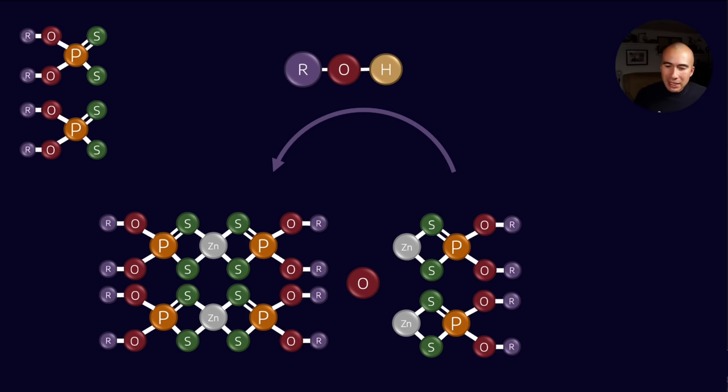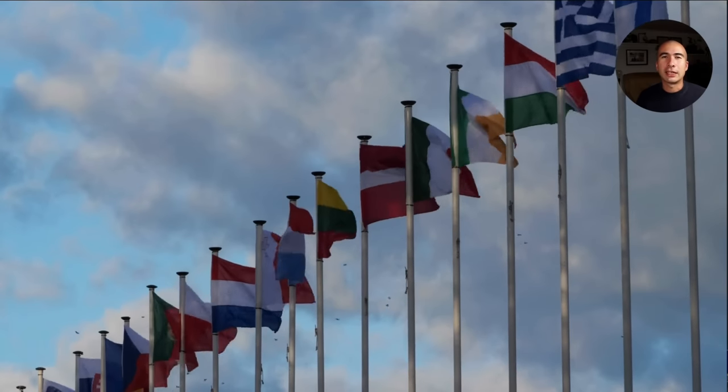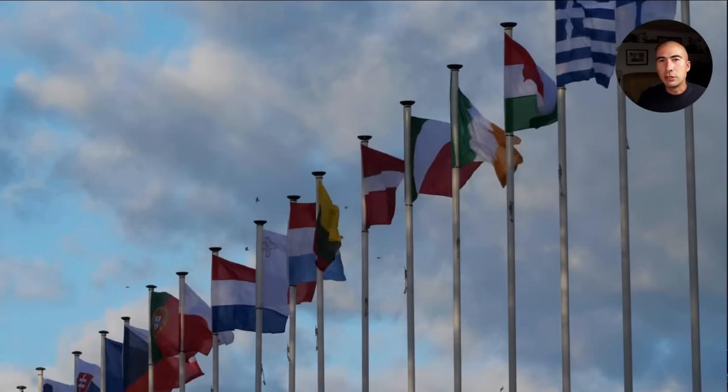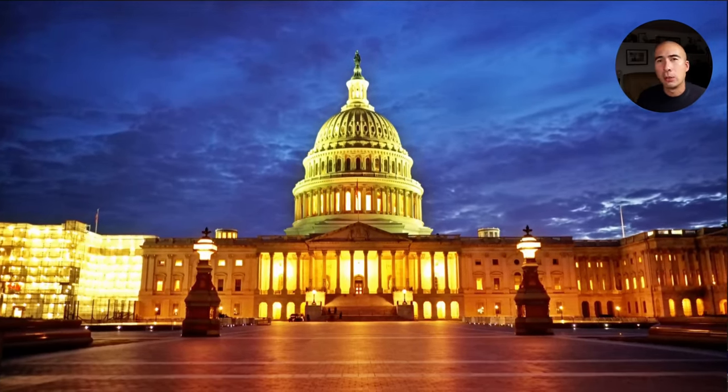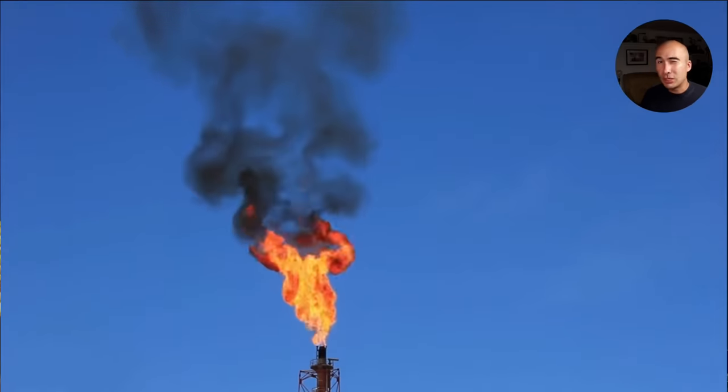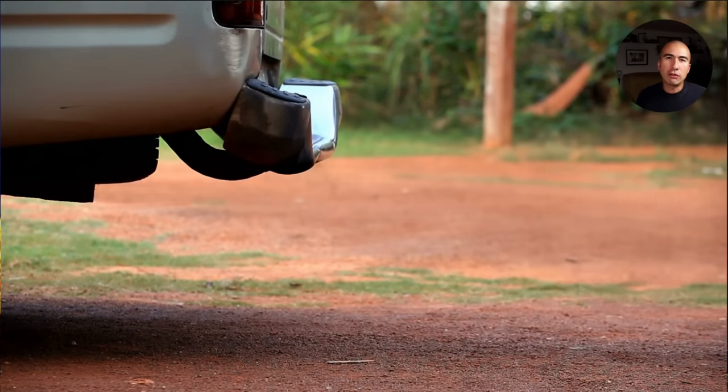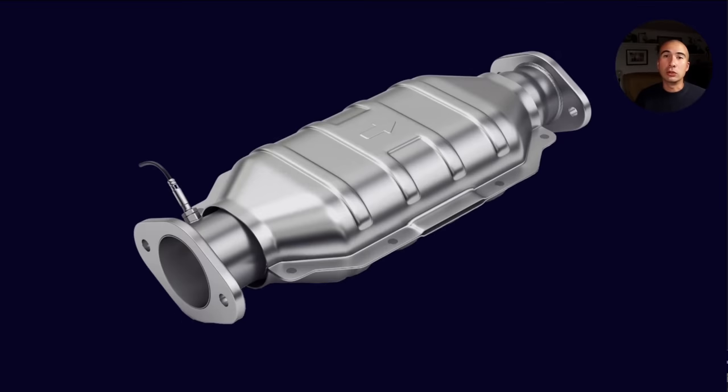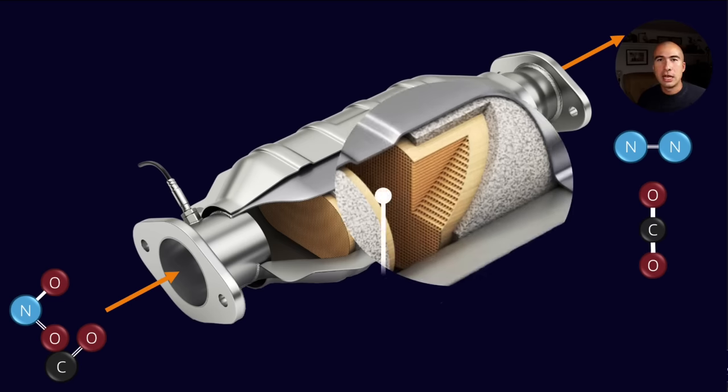But the beginning of the end for ZDTP really started back in 1970. Governments around the world started putting in emissions criteria. Specifically, the US Clean Air Act in the 1970s really got things kicked off, which targeted emissions from the back of vehicles. In order to achieve the criteria, we needed to look at using catalysts, specifically exhaust catalysts.